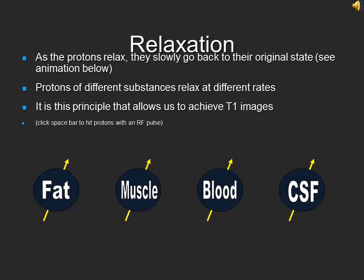Looking at this process more closely can give us valuable information, which will become the basis to create different types of images using MRI. We know that after the RF pulse, the protons lose energy and relax back to their original state. However, it should be noted that different substances relax or lose energy at different rates. Therefore, at any given time after the RF pulse, the protons of different substances will have different amounts of energy. This concept is the basis of T1 imaging.